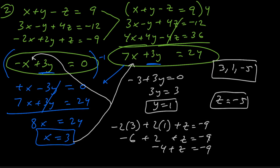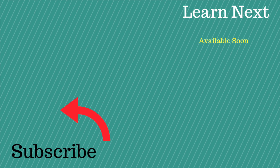You can check your work by taking 3, 1, and negative 5 and substituting into each original equation — the first should give 9, the second negative 12, and the third negative 9. That verifies all equations are satisfied and you have the correct answer. This wraps up how to solve linear equations in three variables. If you want more examples or to dive deeper into Algebra 2 concepts, I'll link another video and my full Algebra 2 course covering all college algebra topics.